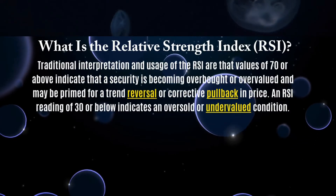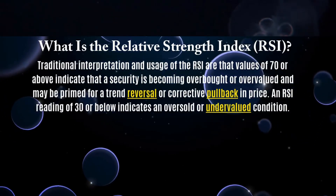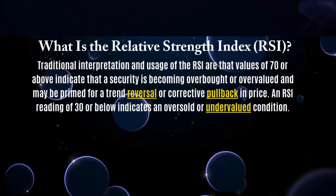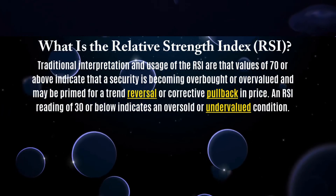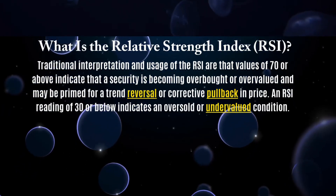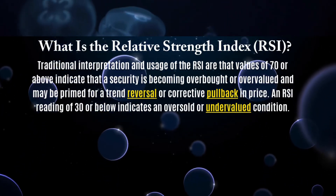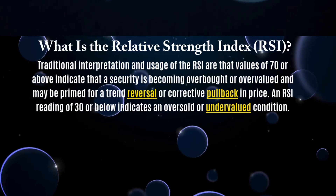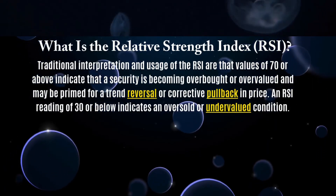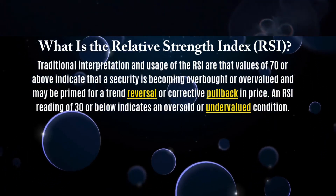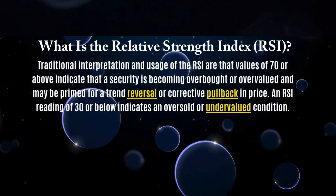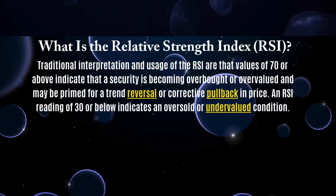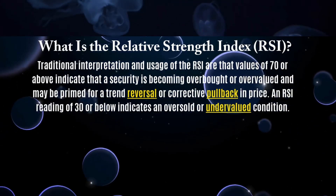Traditional interpretation and usage of the RSI are that values of 70 or above indicate that a security is becoming overbought or overvalued, and may be primed for a trend reversal or corrective pullback in price. An RSI reading of 30 or below indicates an oversold or undervalued condition.